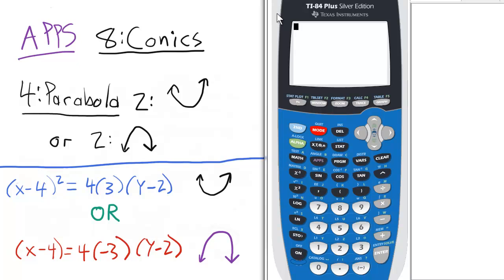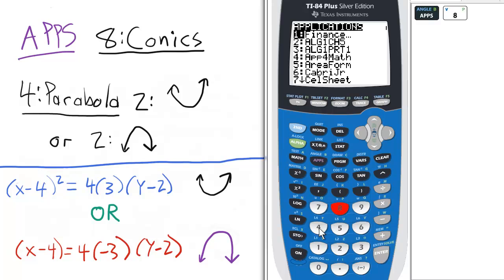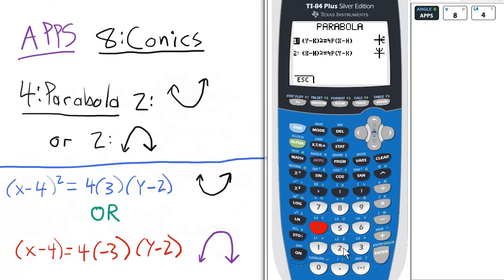To access a parabola opening either up or down, we press apps, 8, 4, and then option 2.